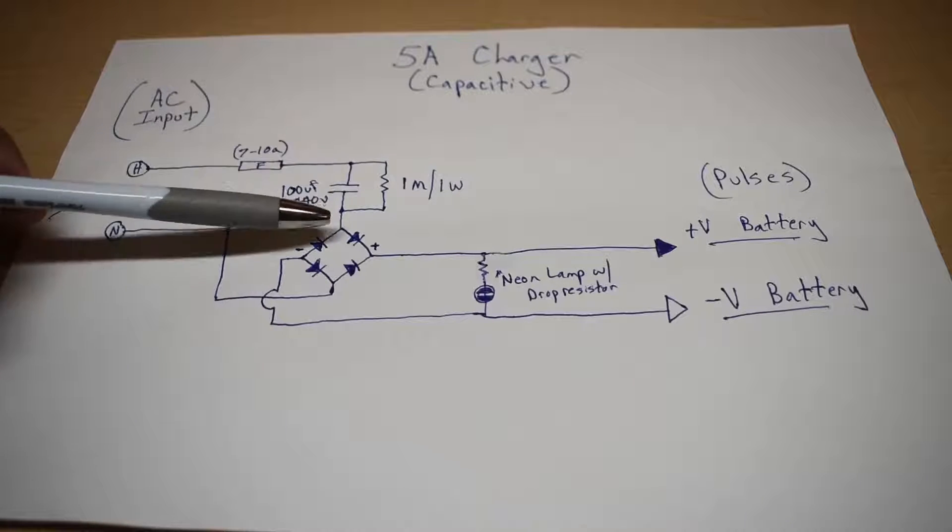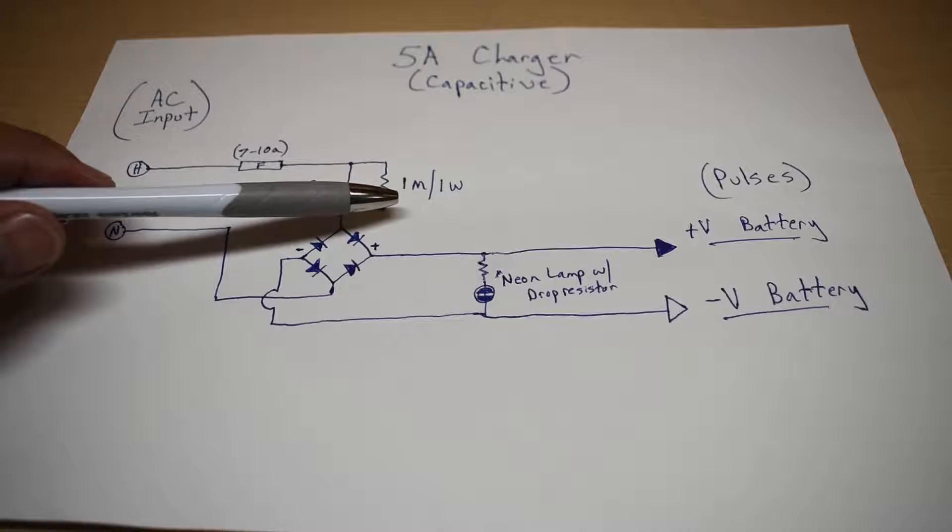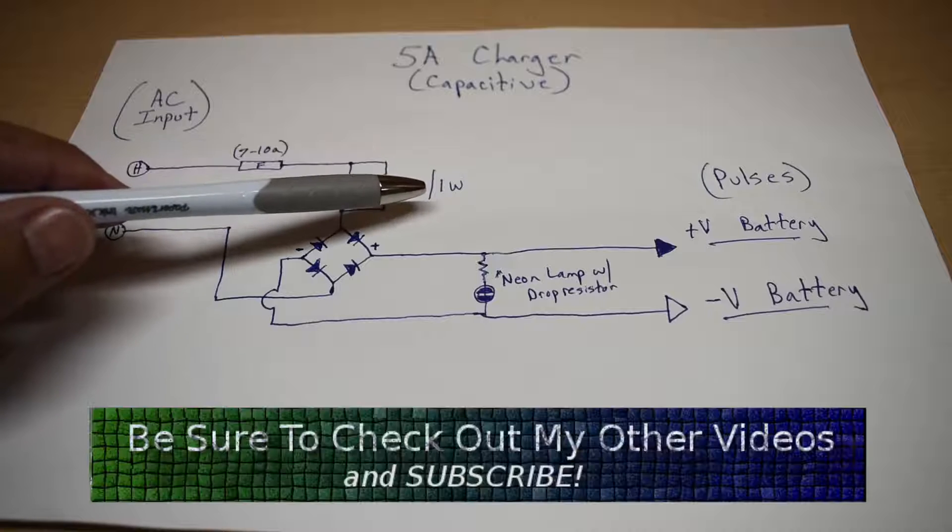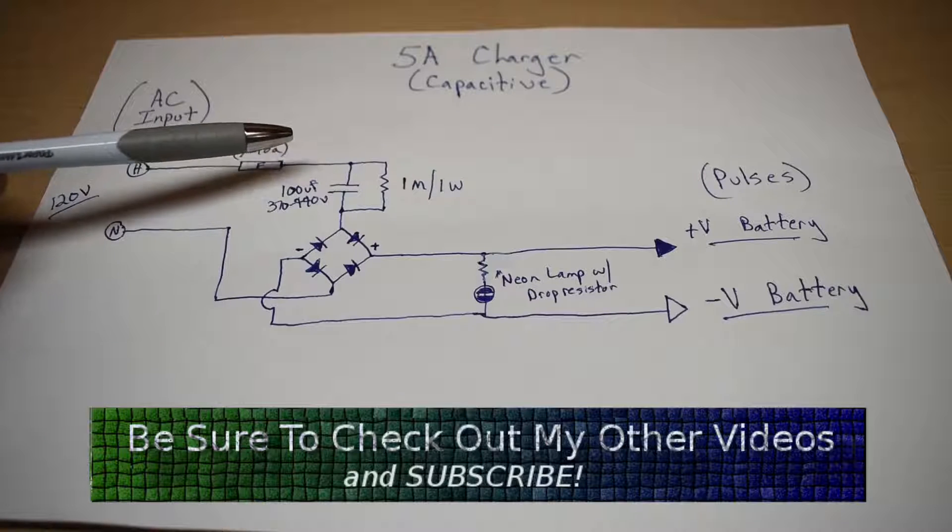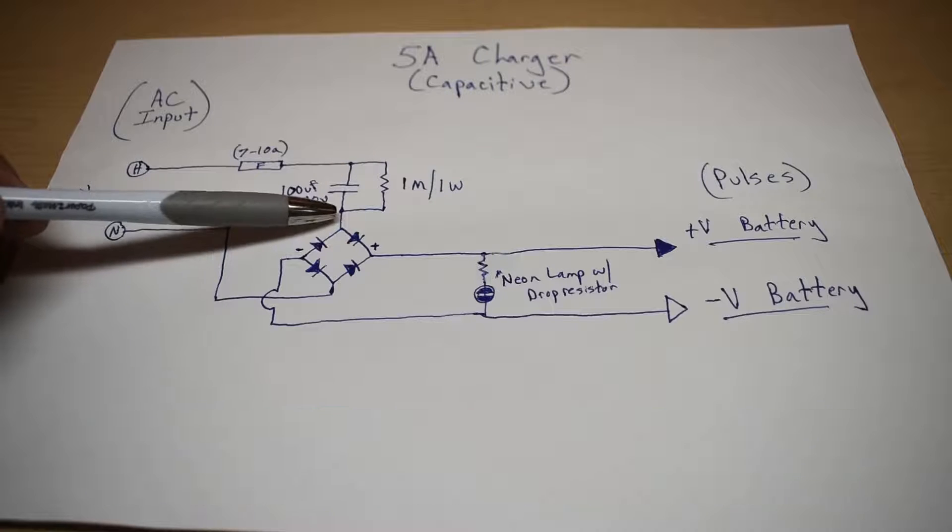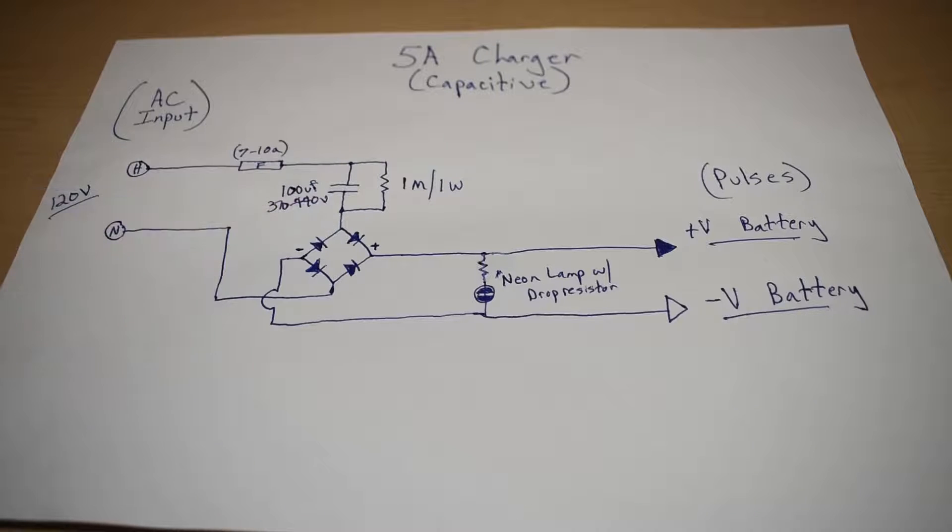Now across this capacitor is a 1 megaohm 1 watt resistor. You can go as low as 270k, just increase the wattage to 2 watts. The purpose of that is when power is removed from the circuit, it's going to bleed down this capacitor, removing the charge.